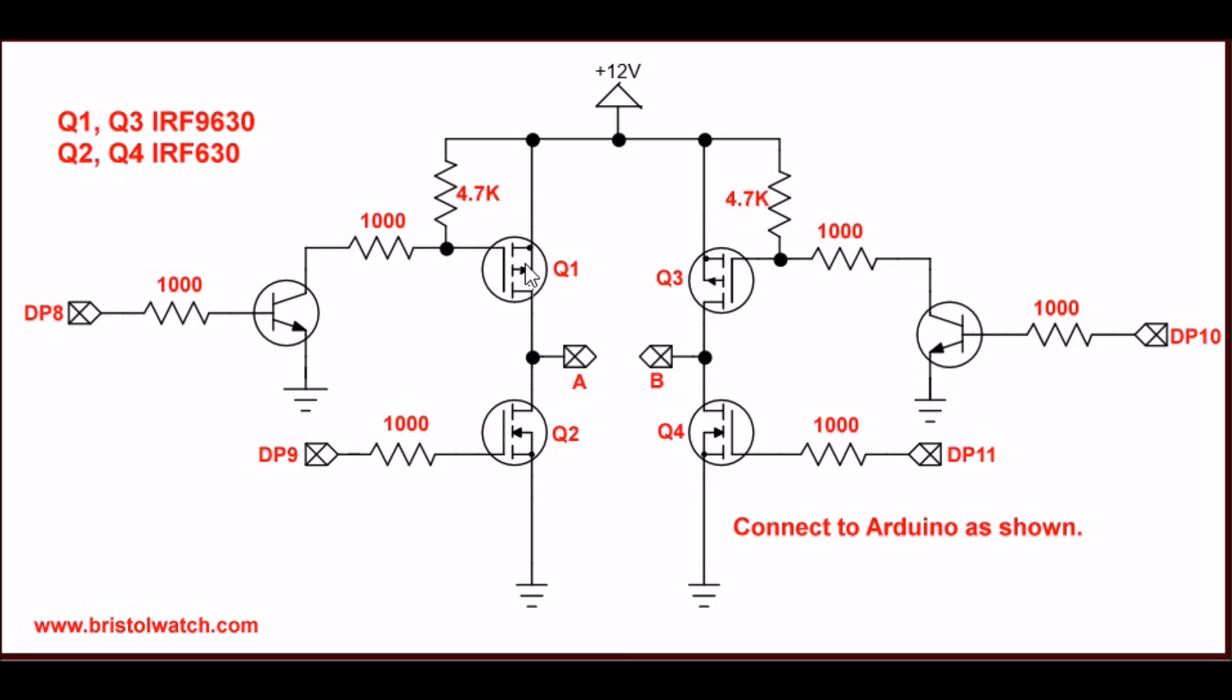There was a report that some of these transistors Q1 and Q3 got hotter than Q2 and Q4. That's to be expected because these particular IRF9630s have a higher turn on resistance than the 630s that are Q2 and Q4. If you're going to be driving some really heavy motors, heat sink all of the transistors.